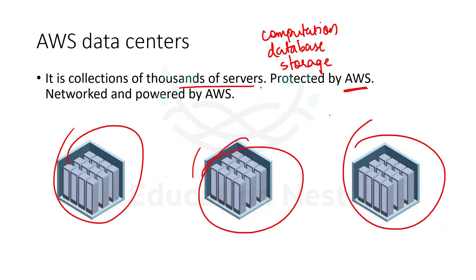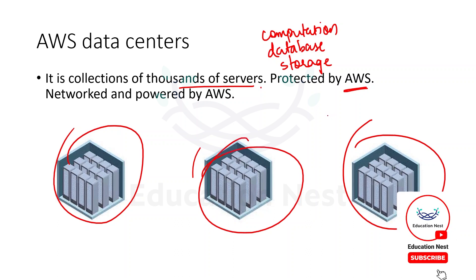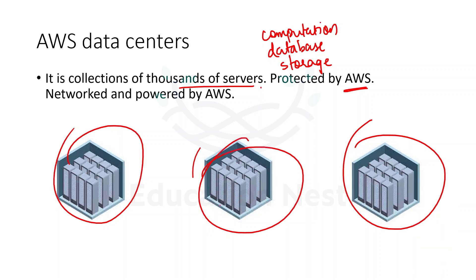Networking, the power, redundant power, cooling of the servers, the physical security of the datacenters, protecting the data inside of it — all of that would be the responsibility of AWS.